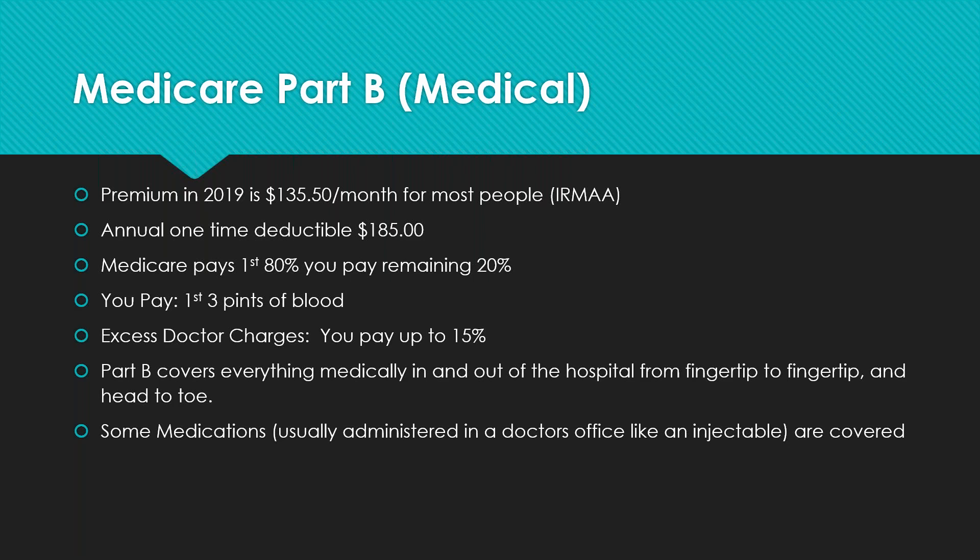For most people — single people making under $95,000 a year, or joint filers under $170,000 — the 2019 premium is $135.50 per month. It comes right out of your Social Security check if you're receiving it. If you've delayed Social Security, you'll pay separately. If you make above those amounts, look up IRMAA (I-R-M-A-A) and speak with your CPA, as you will pay more than $135.50.